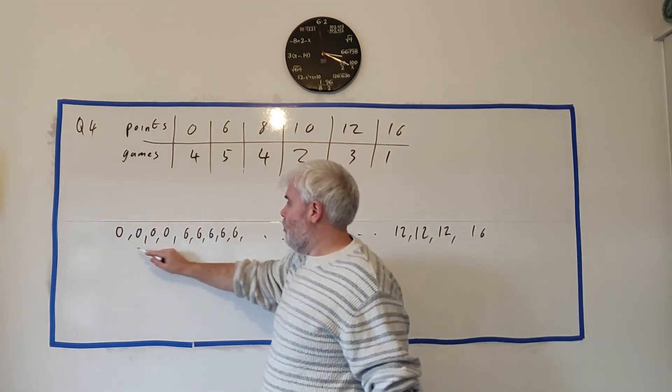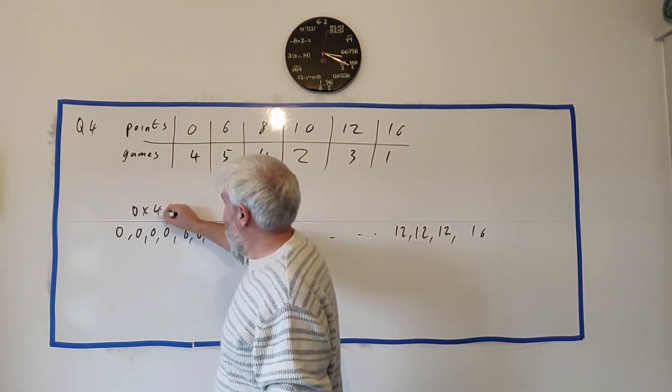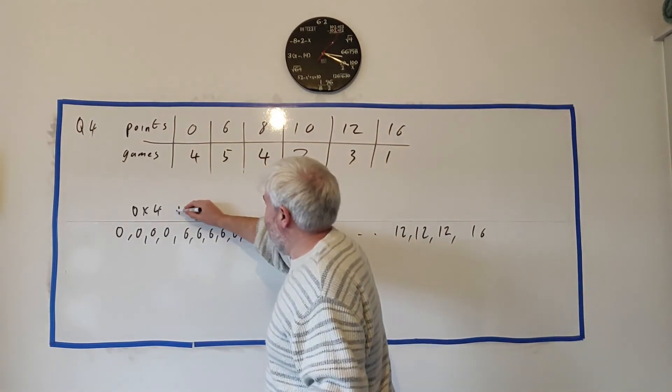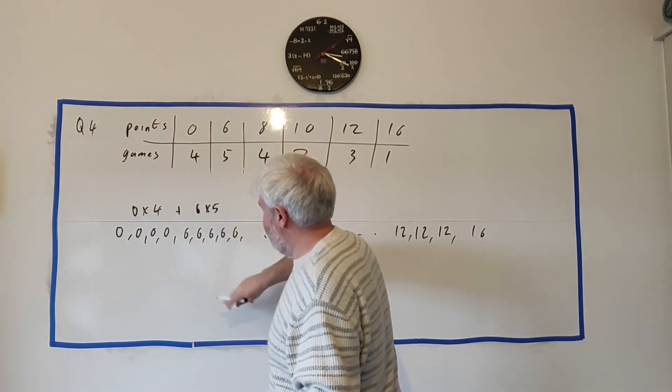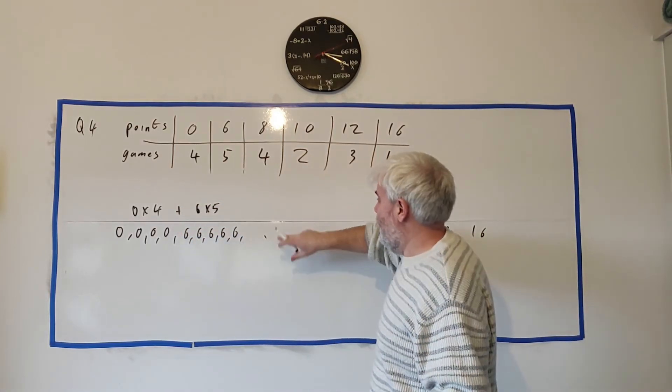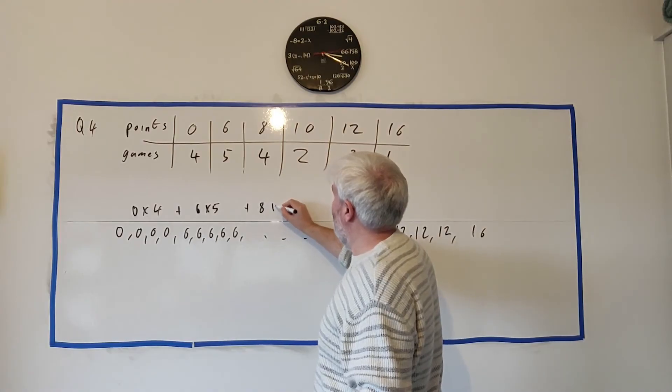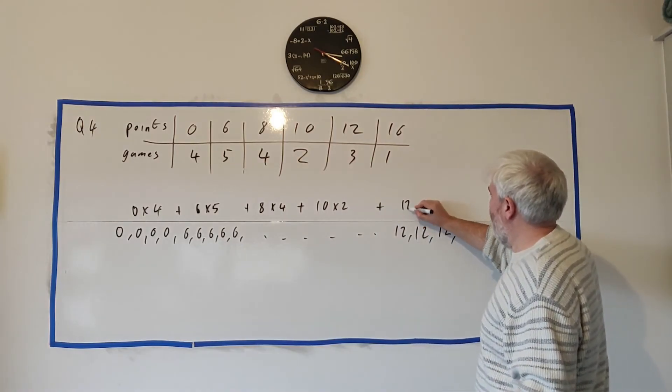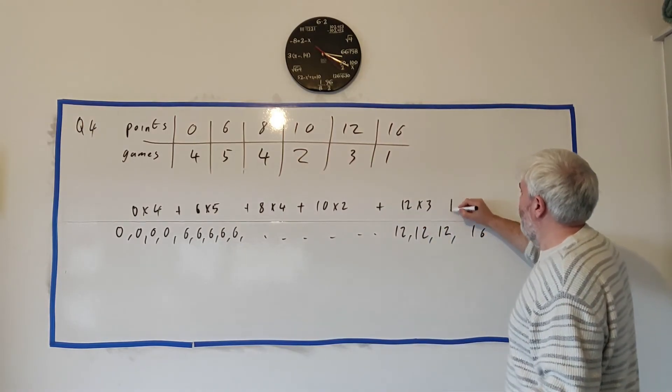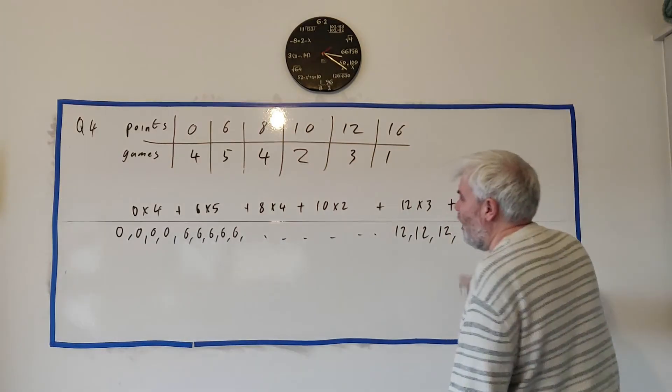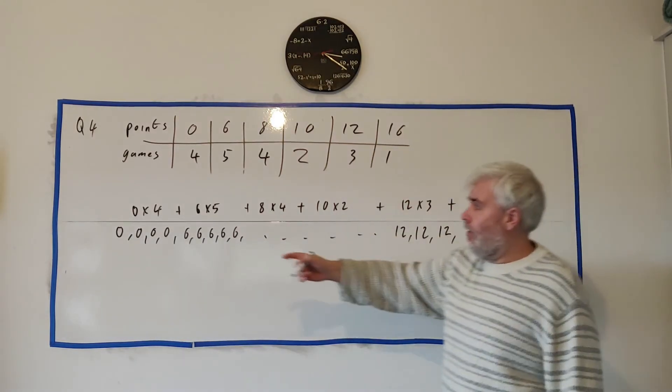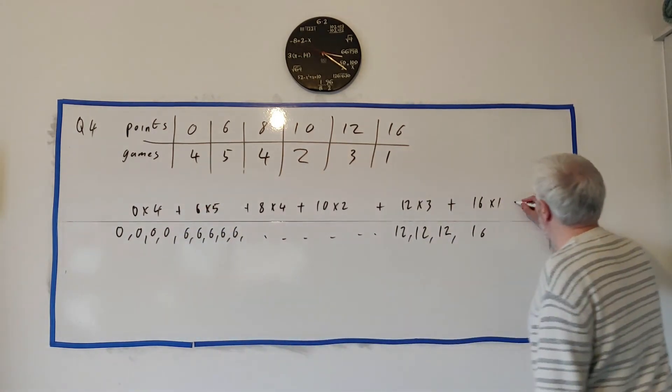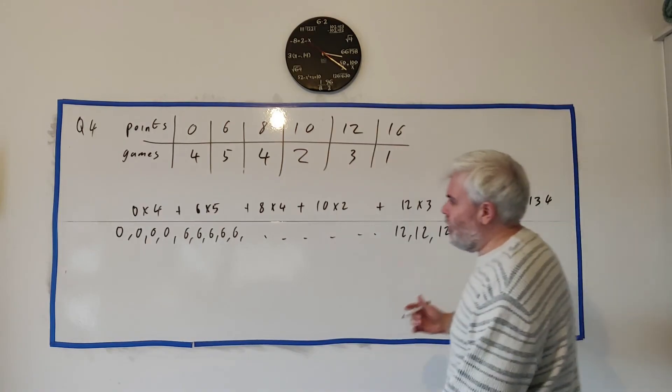So, all we have to do is add up all these zeros, that's like saying 0 multiplied by 4. Add up all these 6's, that's like saying 6 multiplied by 5. And adding all these together, that's 8 multiplied by 4, plus 10 multiplied by 2, plus 12 multiplied by 3, plus 16 times 1. And if we add all these together and put them on a calculator, we get 134. And that'd be the top row.